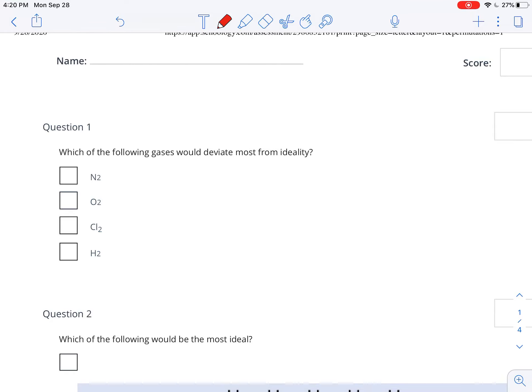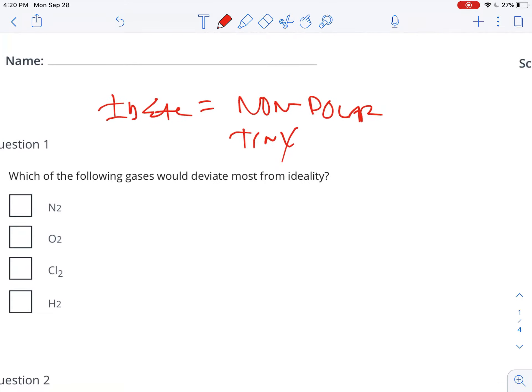So we're talking about ideality and non-ideality here. Remember, an ideal gas is one that is non-polar and tiny. Because technically speaking, in an ideal gas, the gas particles themselves have no volume. That's not realistic, but it's a good approximation if there's a lot of space in between the particles. So an ideal gas is one that is non-polar and tiny.